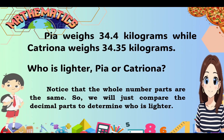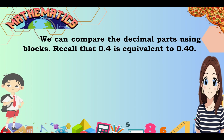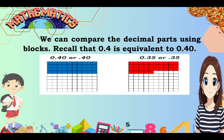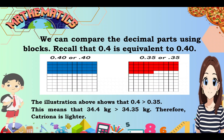Now let's analyze this problem. Pia weighs 34.4 kilograms while Catriona weighs 34.35 kilograms. Who is lighter, Pia or Catriona? Notice that the whole number parts are the same, so we will just compare the decimal parts to determine who is lighter. We can compare the decimal parts using blocks. Recall that 0.4 tenths is equivalent to 0.40 hundredths. The illustration shows that 0.4 tenths is greater than 0.35 hundredths, meaning 34.4 kilograms is greater than 34.35 kilograms. Therefore, Catriona is lighter.